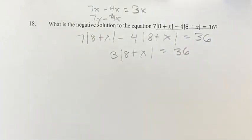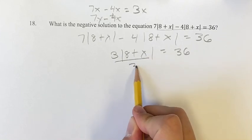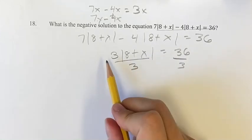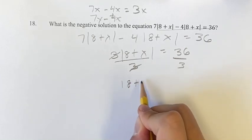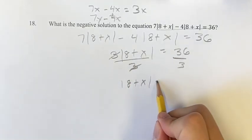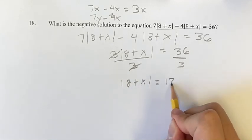And we're solving for x, so we want to get x on its own. The first thing to do is divide both sides by 3 because that will get the absolute value on its own. These 3s will cancel and we're left with 8 plus x inside the absolute value. It's going to be equal to 36 divided by 3 is equal to 12.